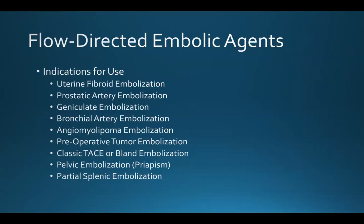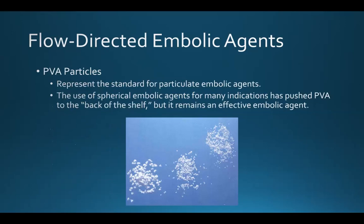The indications for flow-directed embolic agents are many and include, among others, the uterine fibroid embolization procedure, prostatic artery embolization, geniculate embolization, bronchial artery embolizations for patients with hemoptysis, embolization of angiomyolipomas, or preoperative embolizations of various tumors. A lot of what we do in interventional oncology falls into this category, such as classic TACE, bland embolization, or radioembolization, and there are certainly several other indications in which it would be appropriate to use a flow-directed embolic agent.